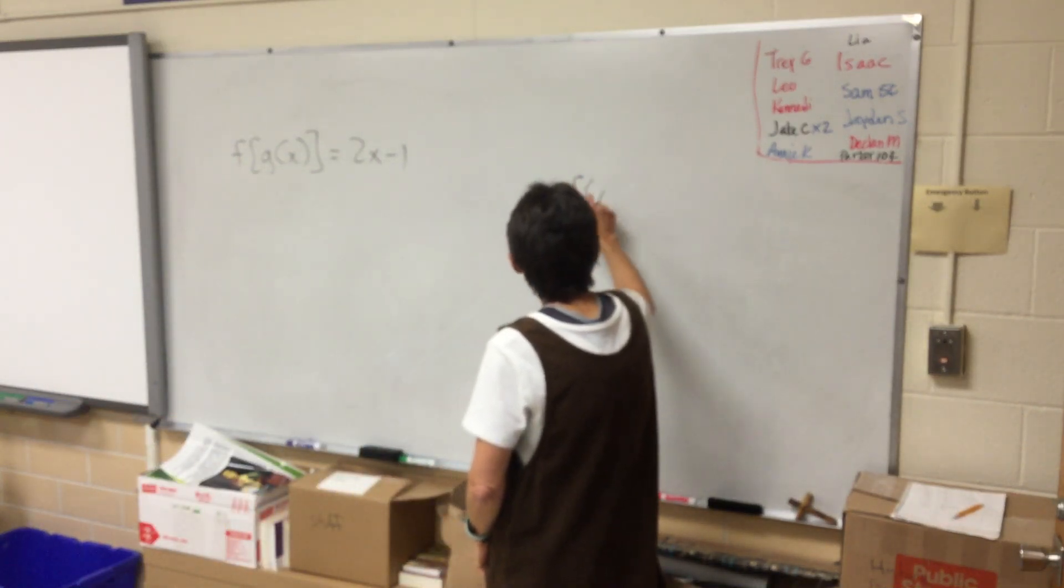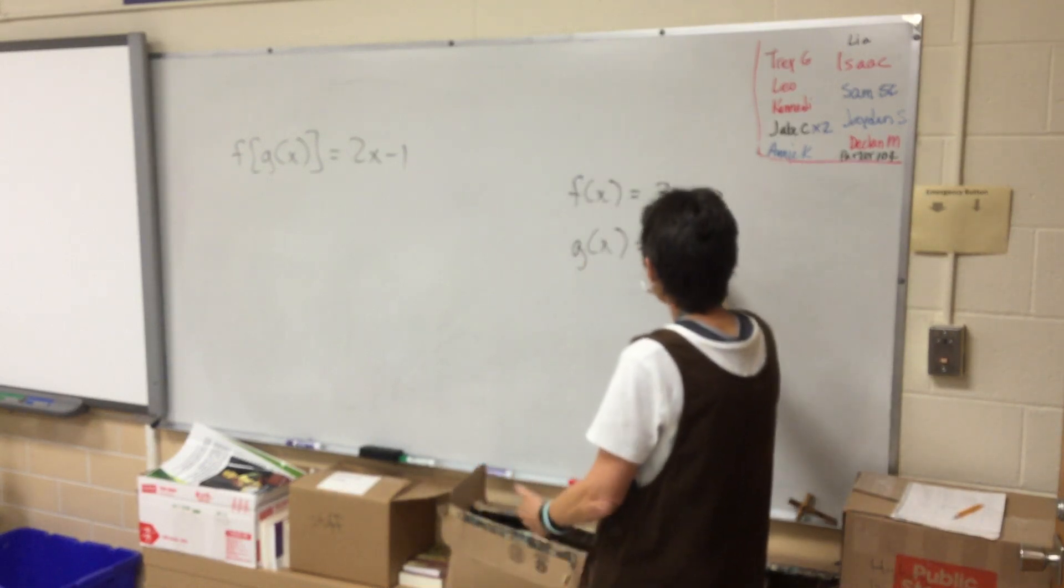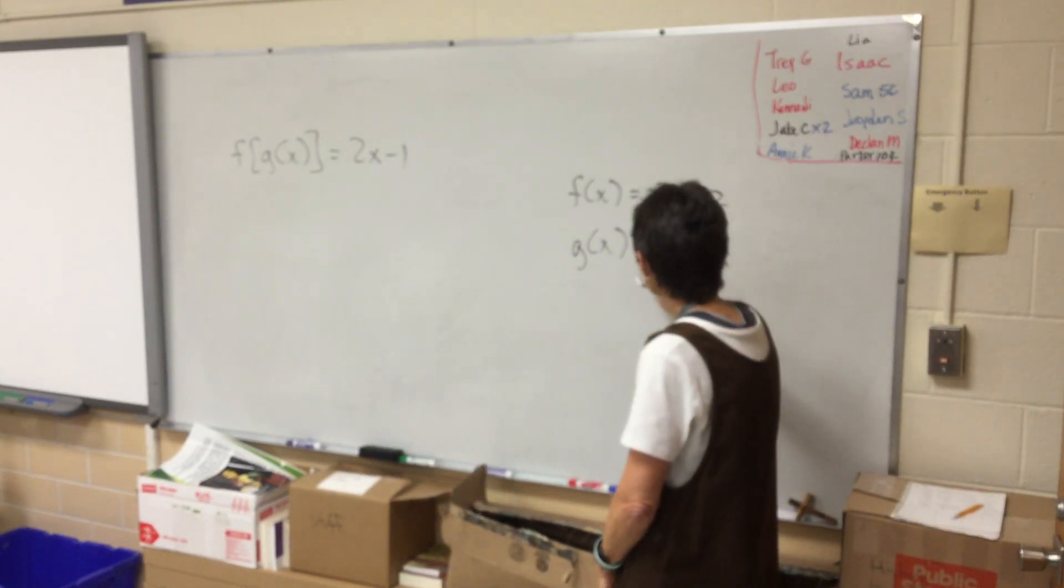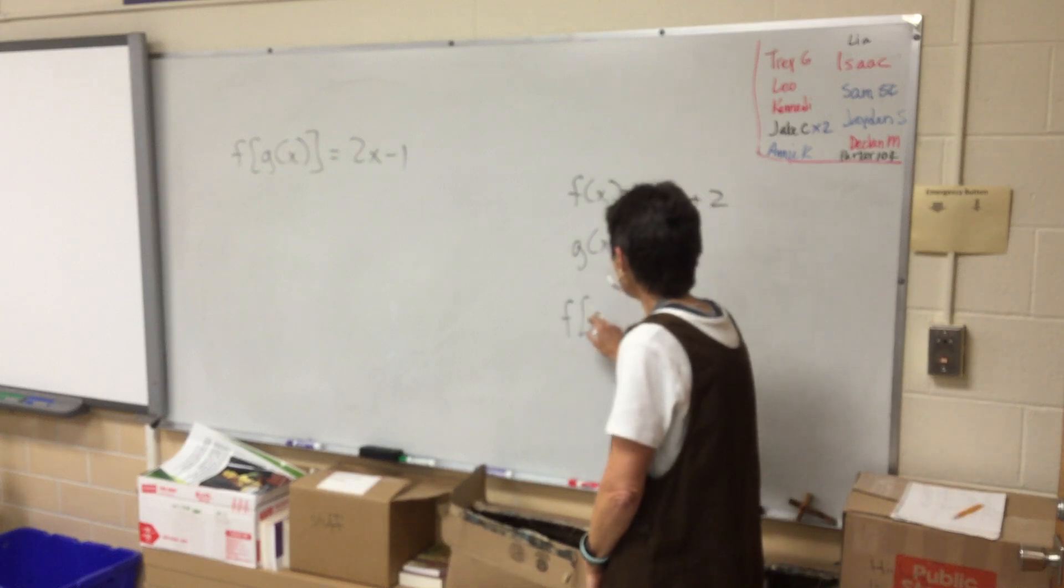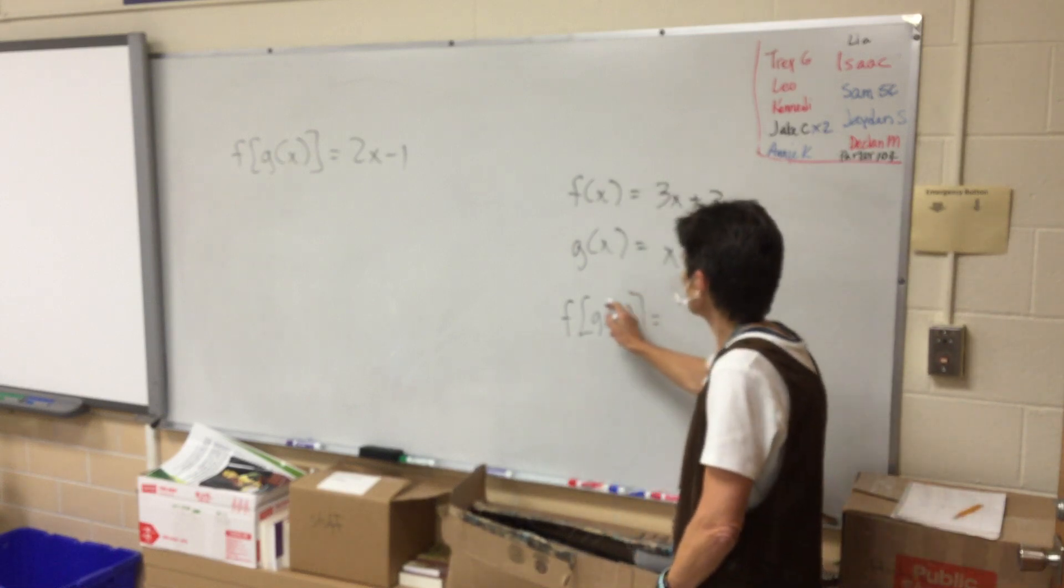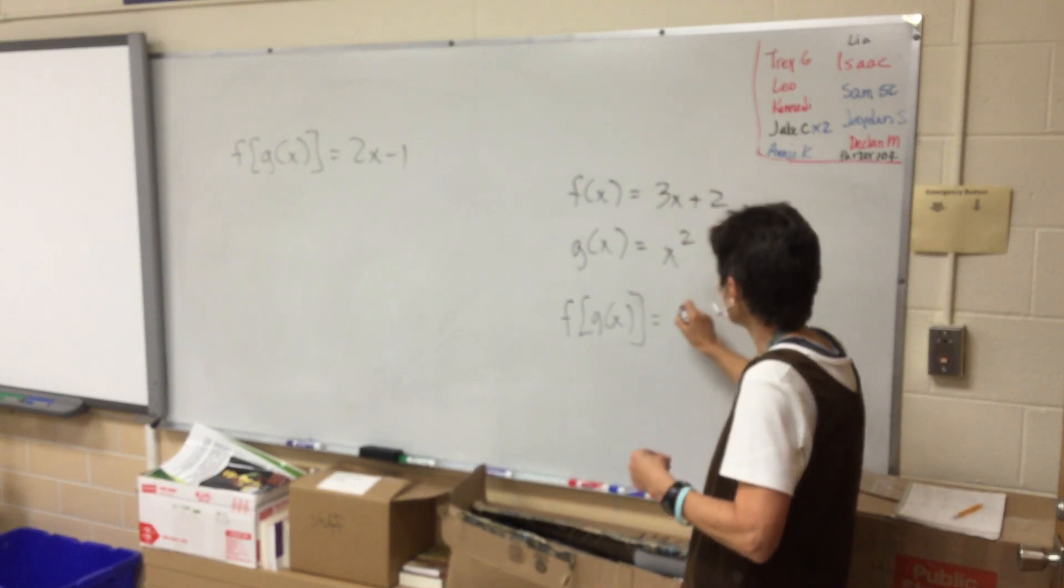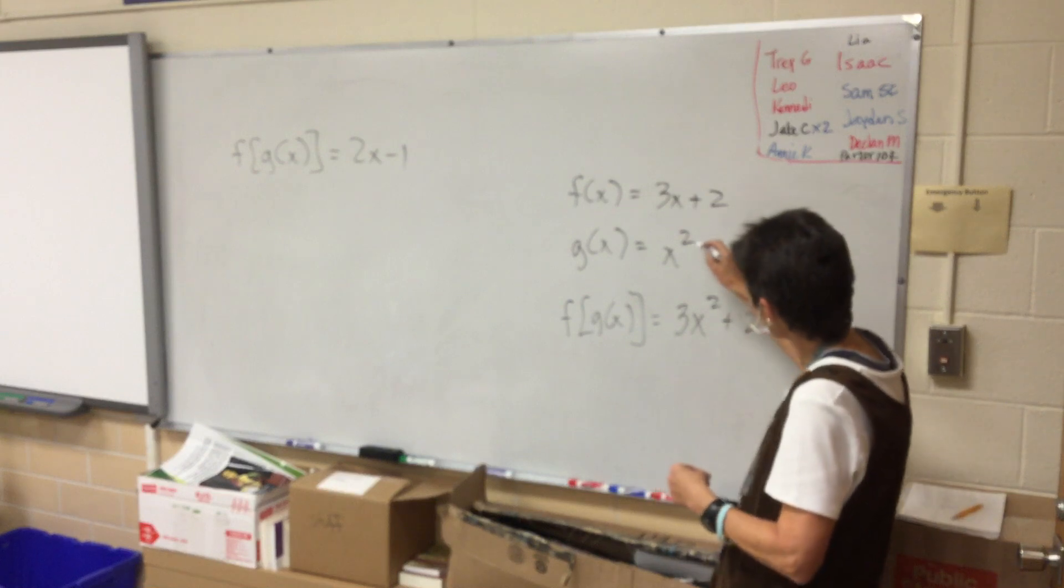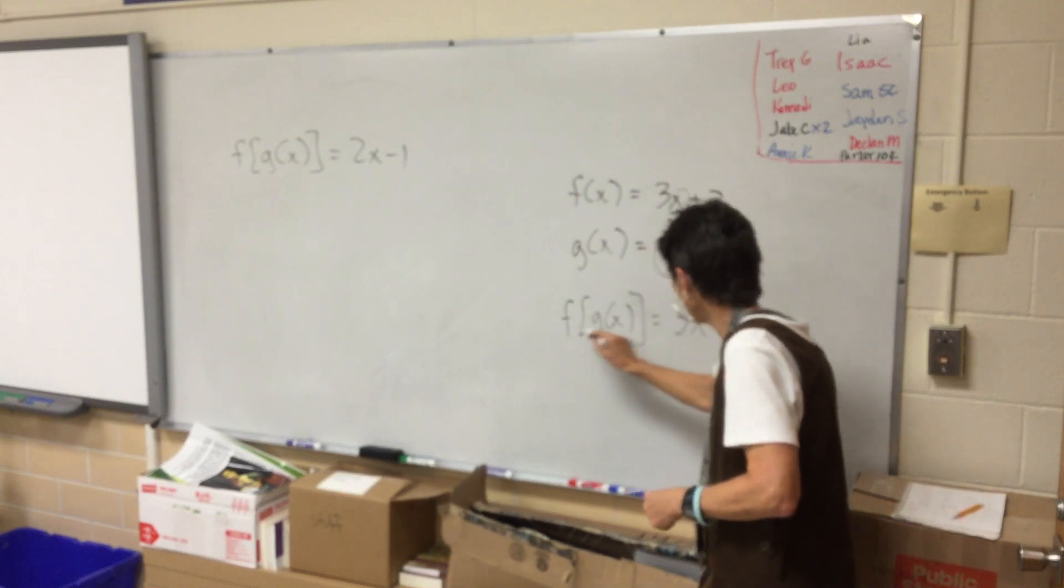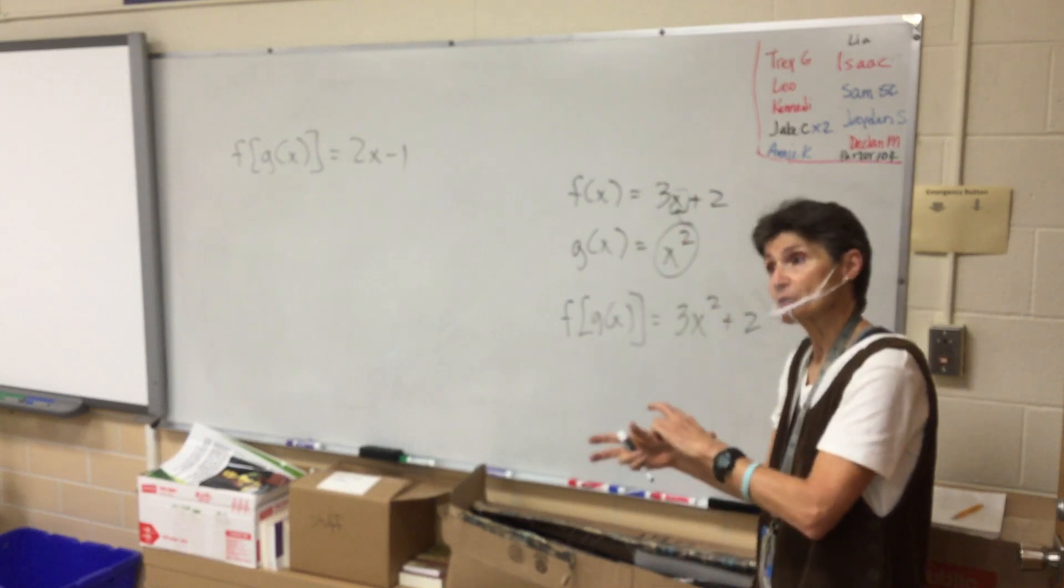Over to the side here, let me remind you that if f of x were 3x plus 2, and g of x was x squared, for example, if I said to you, let's find f of g of x, you would take g of x, the equation x squared, and plug it in. So you get 3x squared plus 2, right? You take this and plug it in right here. Take the g function and plug it into f.